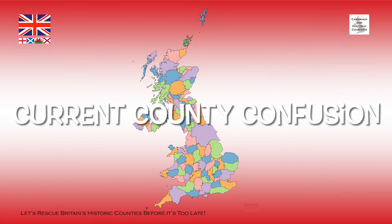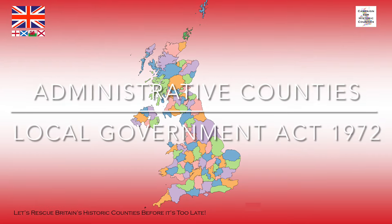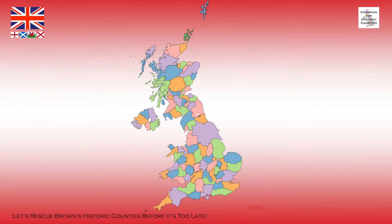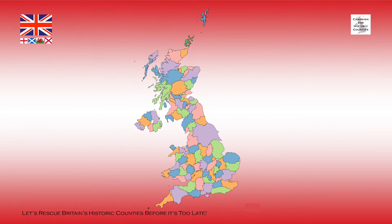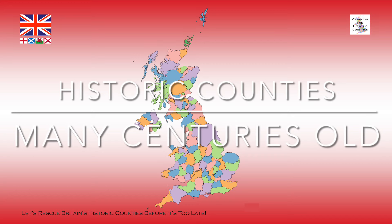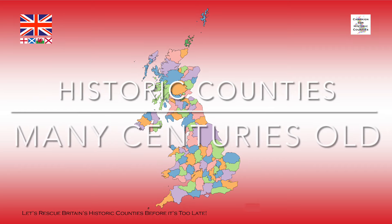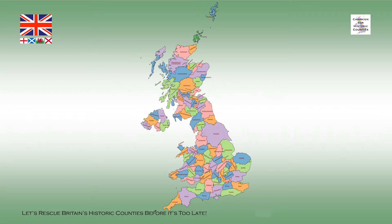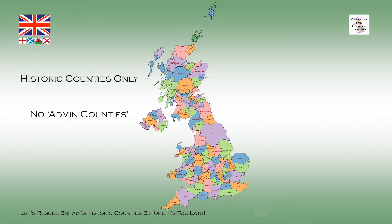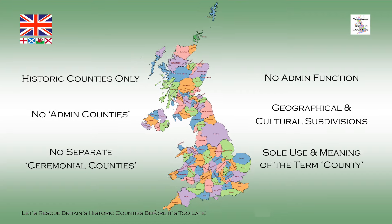The current confusion surrounding Britain's counties stems from the fact that there are currently three different definitions of the term county in law: 1. Administrative counties, defined by the Local Government Act 1972. 2. Ceremonial counties, defined by the Lieutenancies Act 1997. 3. Historic counties — geographical boundaries that date back over many centuries. There is no need for definitions 1 and 2 to exist alongside the historic counties. It is therefore part of our campaign that the term county should not be used to mean an admin zone, and that ceremonial counties should match the historic counties. The result of this would be a return to just one definition of the term county and end much of the current county confusion.